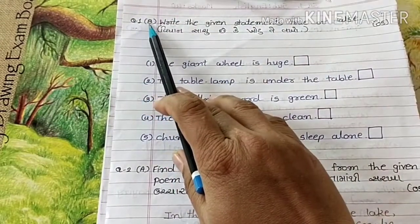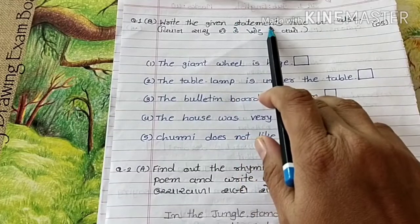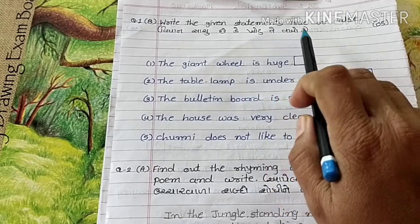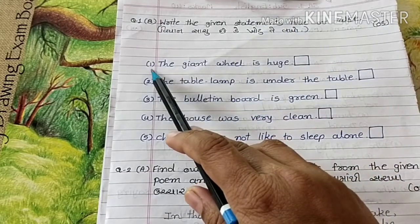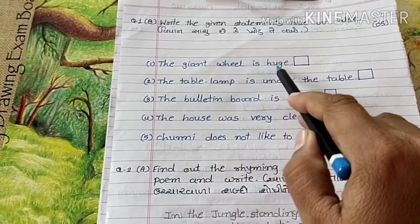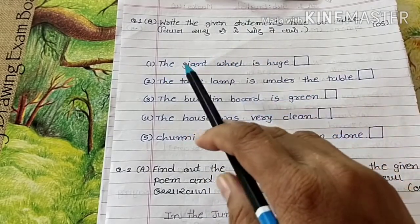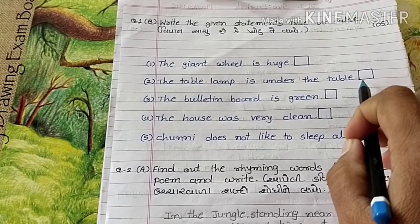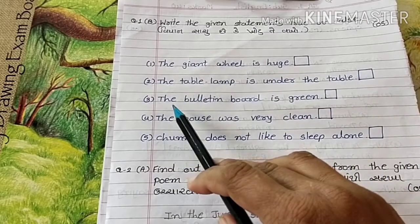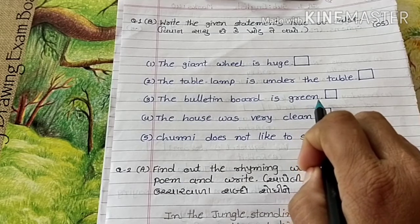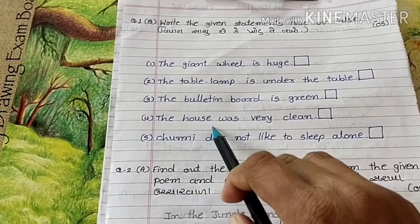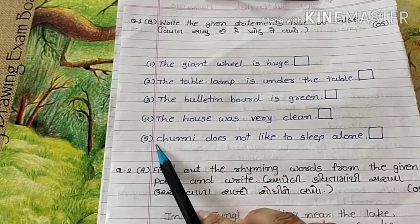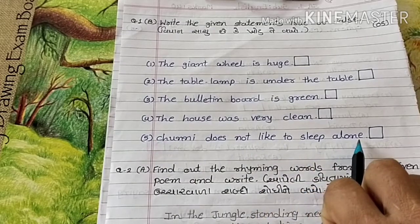Question 1B: Write the given statements true or false. 1. The giant whale is huge. — True. 2. The table lamp is under the table. — False. 3. The bulletin body is green. — True. 4. The house was very clean. — False. 5. Chunni does not like to sleep alone. — True.